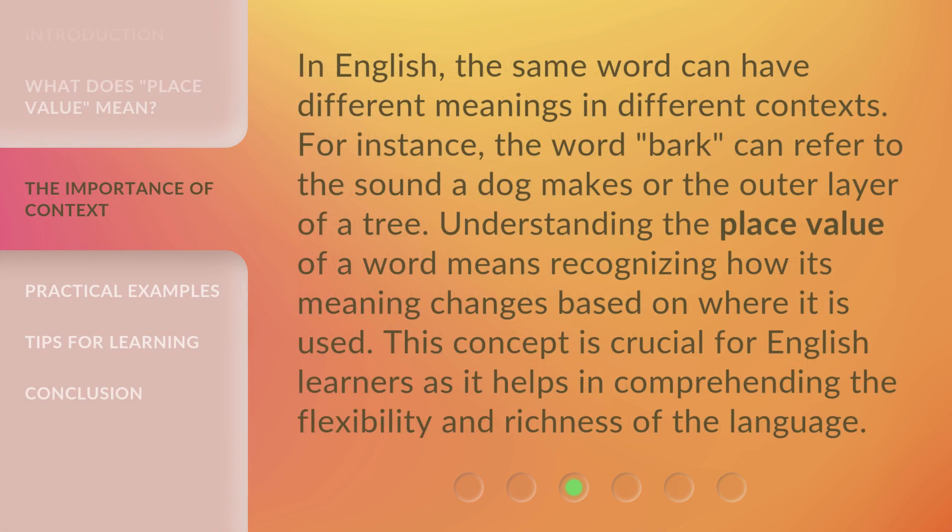In English, the same word can have different meanings in different contexts. For instance, the word 'bark' can refer to the sound a dog makes or the outer layer of a tree. Understanding the place value of a word means recognizing how its meaning changes based on where it is used. This concept is crucial for English learners as it helps in comprehending the flexibility and richness of the language.